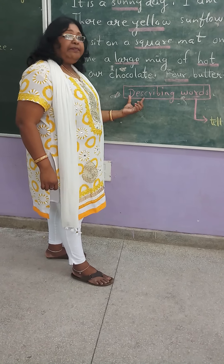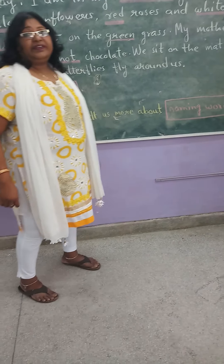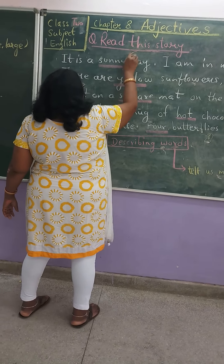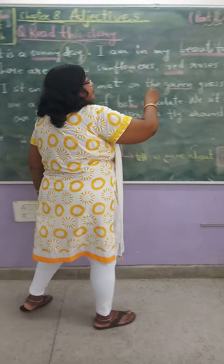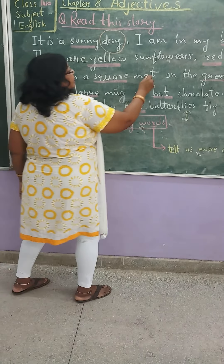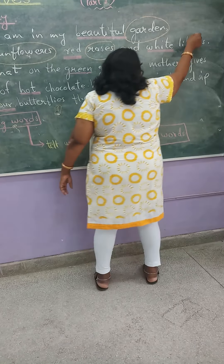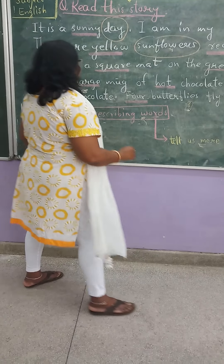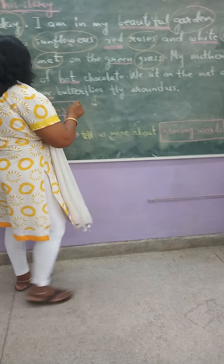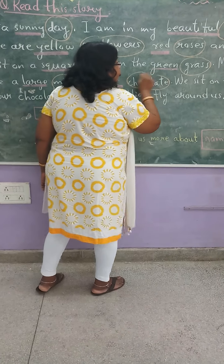You will find that describing words tell us more about naming words. The naming words here are: garden, sunflowers, roses, berries, mat, glass, mud, chocolate, butterfly.